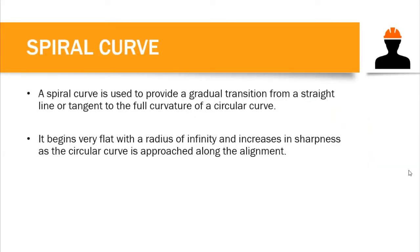So what is a spiral curve? A spiral curve is a curve used to provide a gradual transition from a straight line or tangent to the full curvature of a circular curve. It begins very flat with a radius of infinity and increases in sharpness as the circular curve is approached along the alignment.